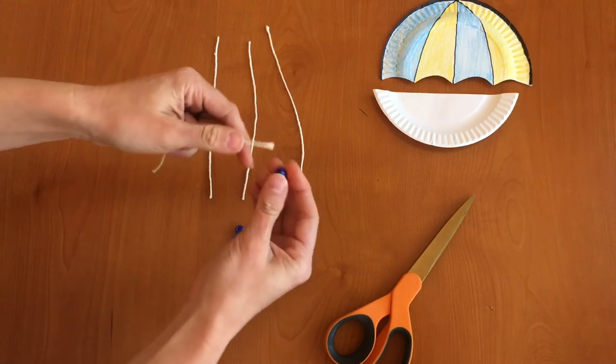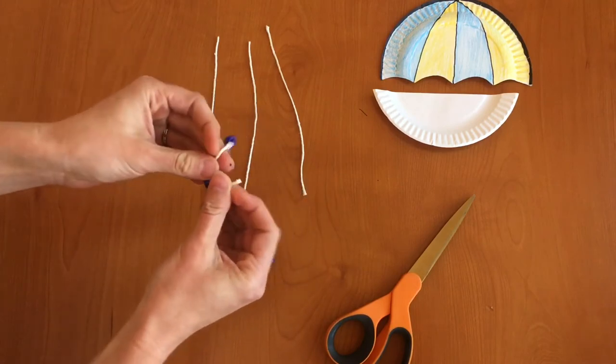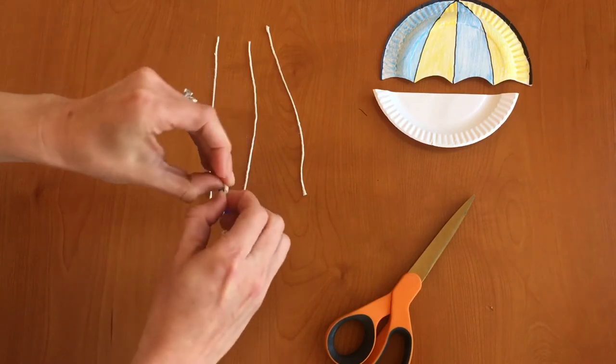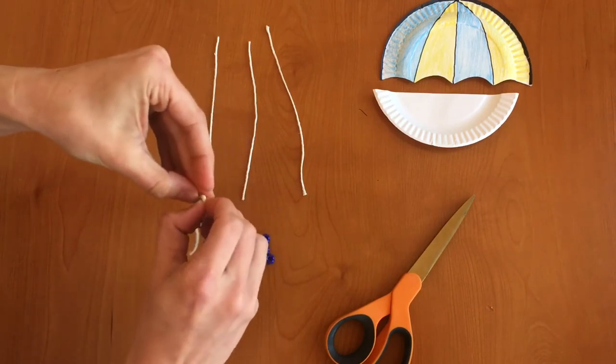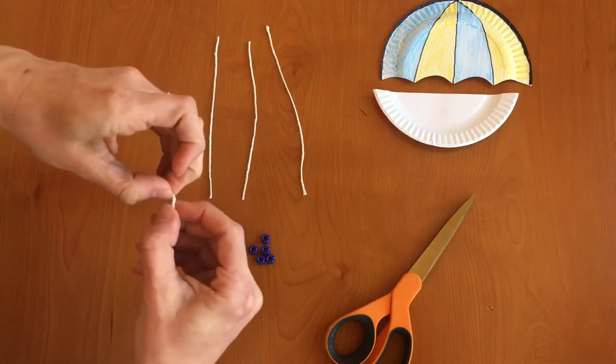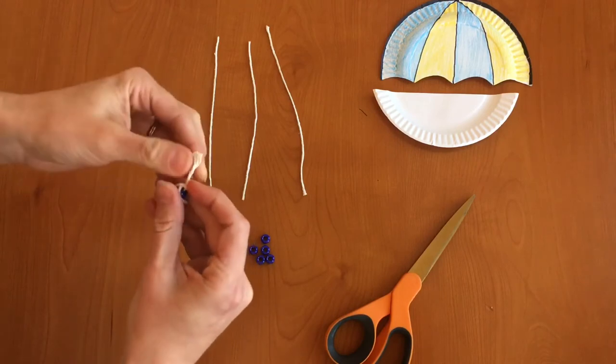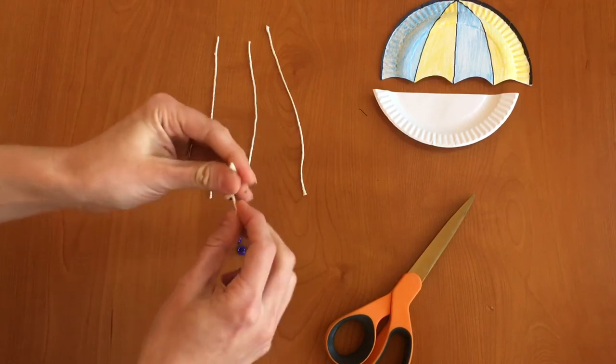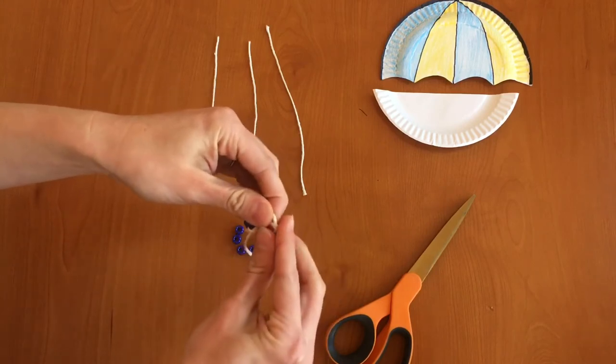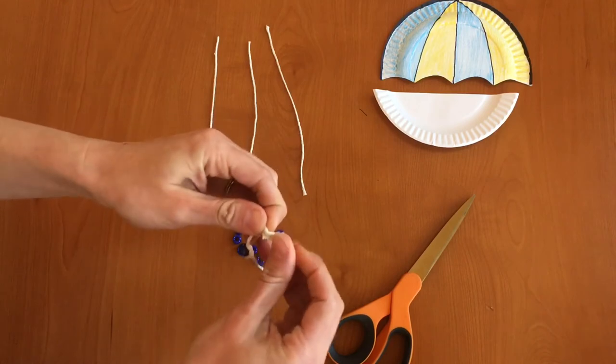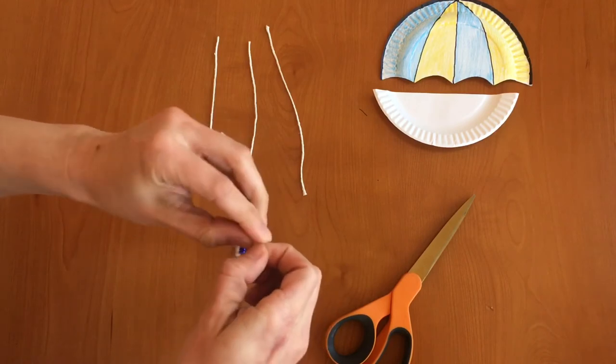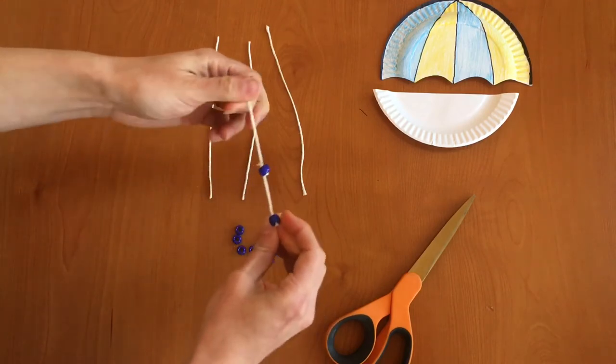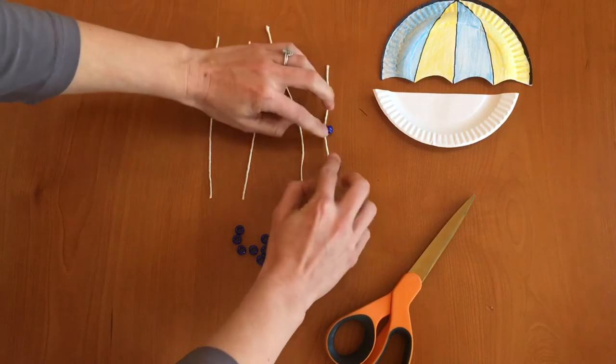And then I'm going to do one towards the bottom as well. And the one on the bottom you want to tie in a double knot so that it really doesn't come off. All right.